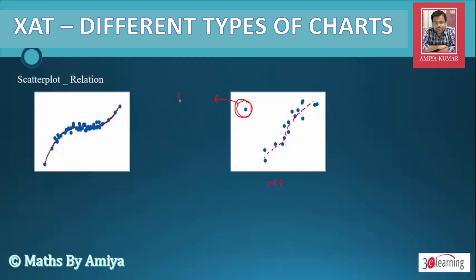You also need to understand the value of R squared. If R squared is near to 1, that means the two variables are highly correlated in positive terms. With the Scattered Plot, we find the relationship between the two variables.